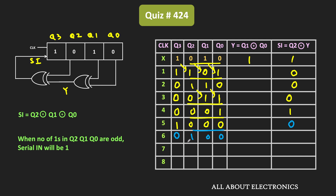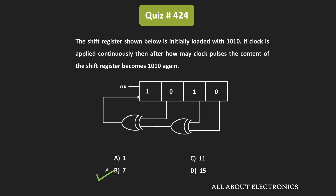If we see Q2 Q1 Q0, they are 100. Since the number of 1's is odd, the output of the second XOR gate becomes 1 and the serial input becomes 1. At the next clock edge, Q3 becomes 1, and the remaining bits right shift. After the seventh clock pulse, the content of the register equals 1010. So after seven clock pulses, the content of the register is getting repeated. For the given question, option B is the correct answer.